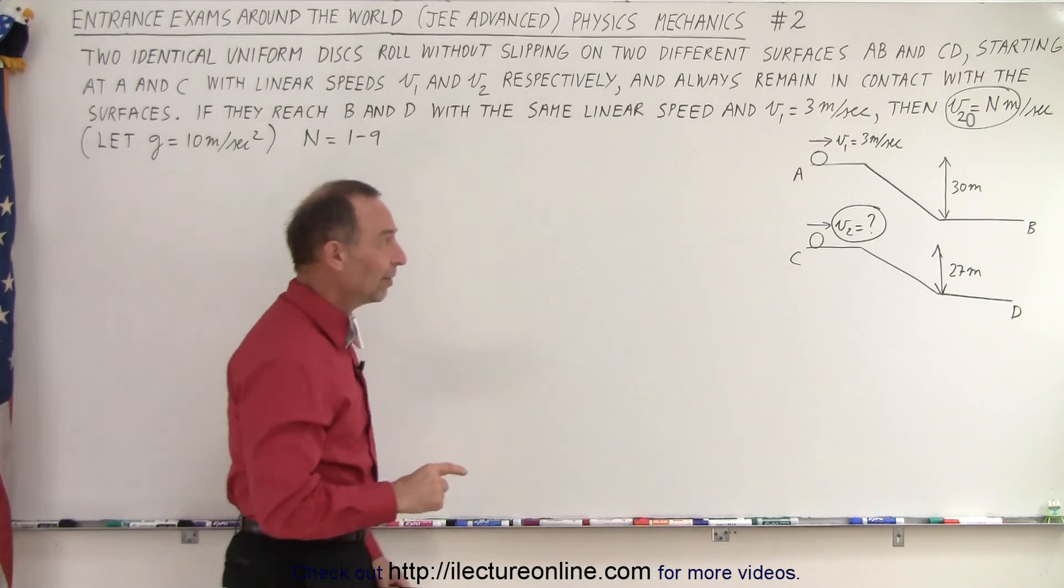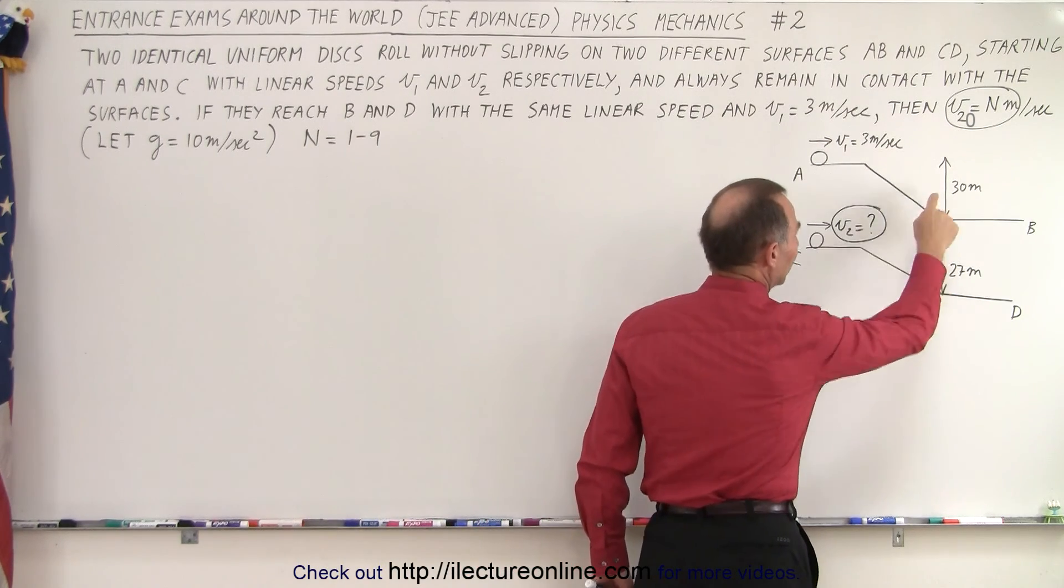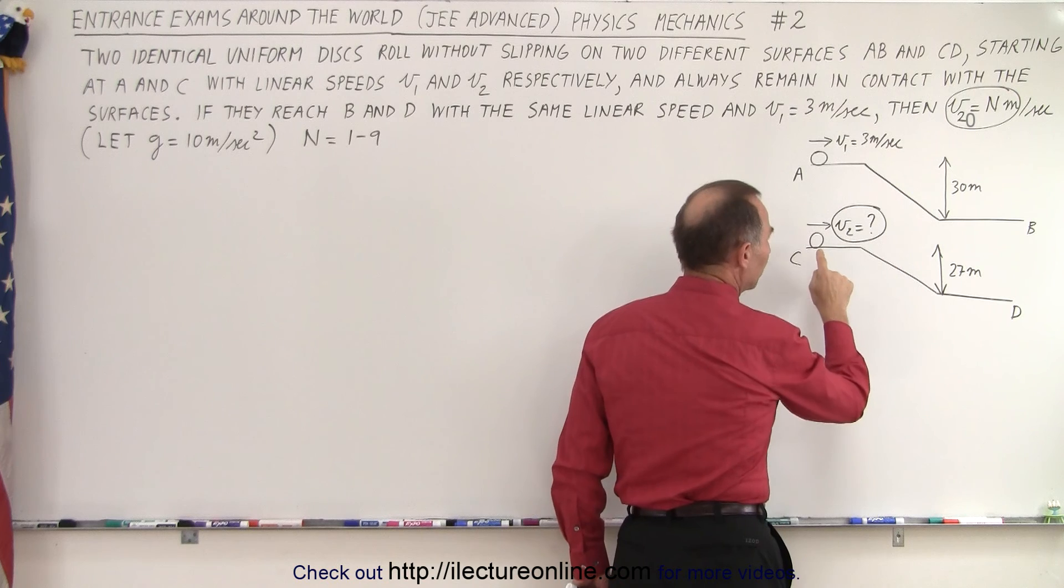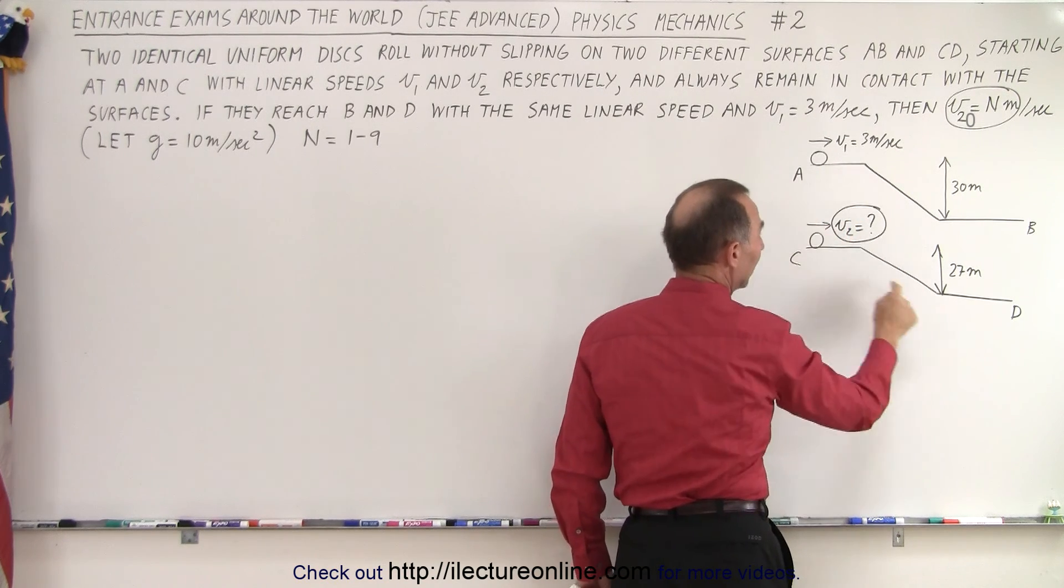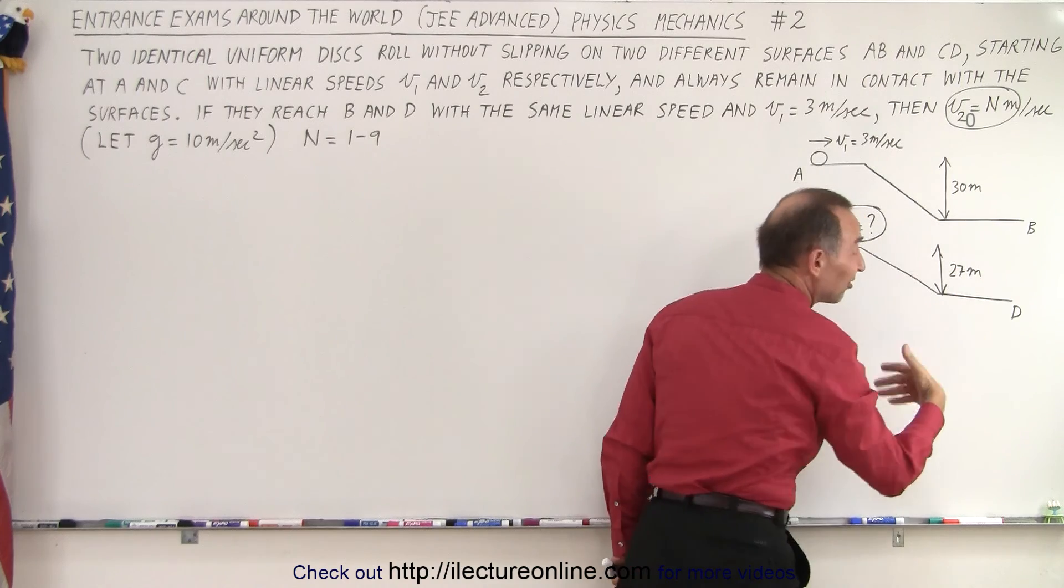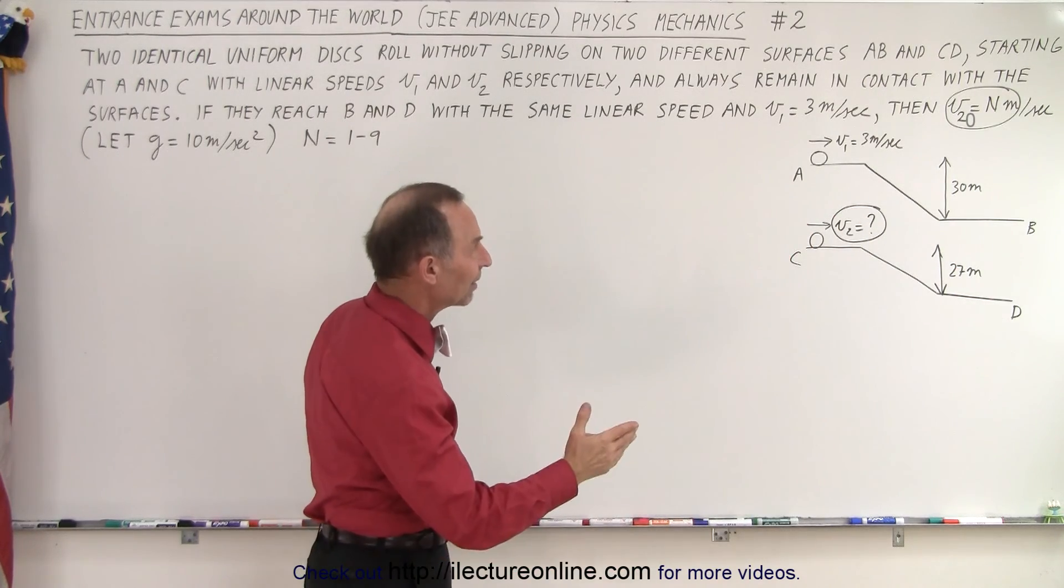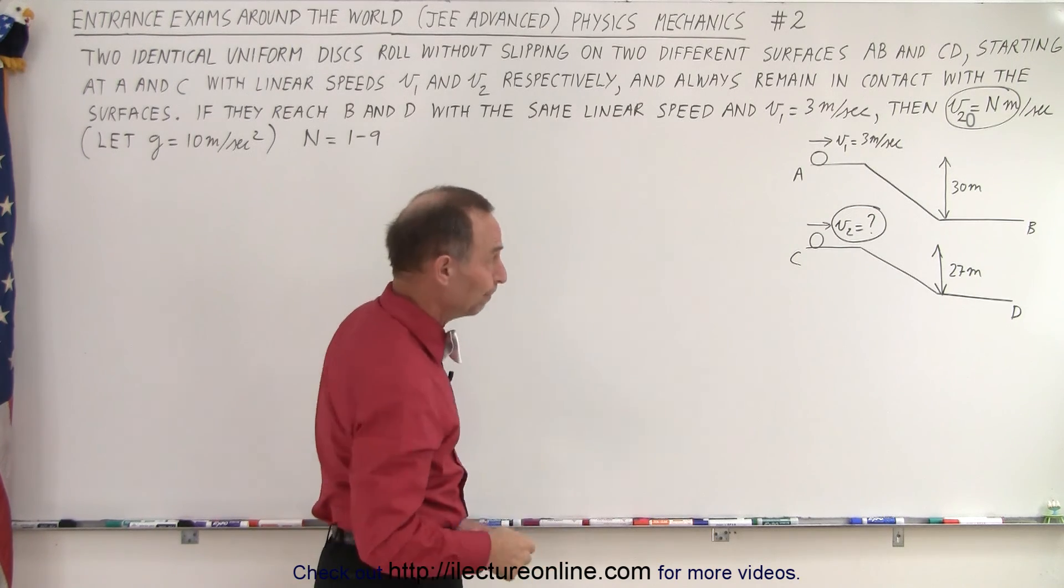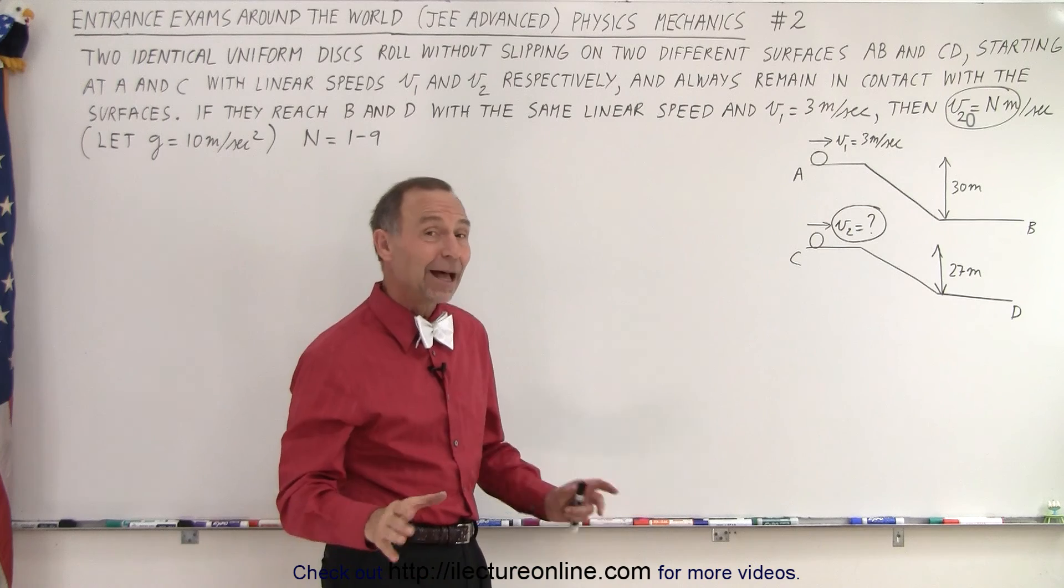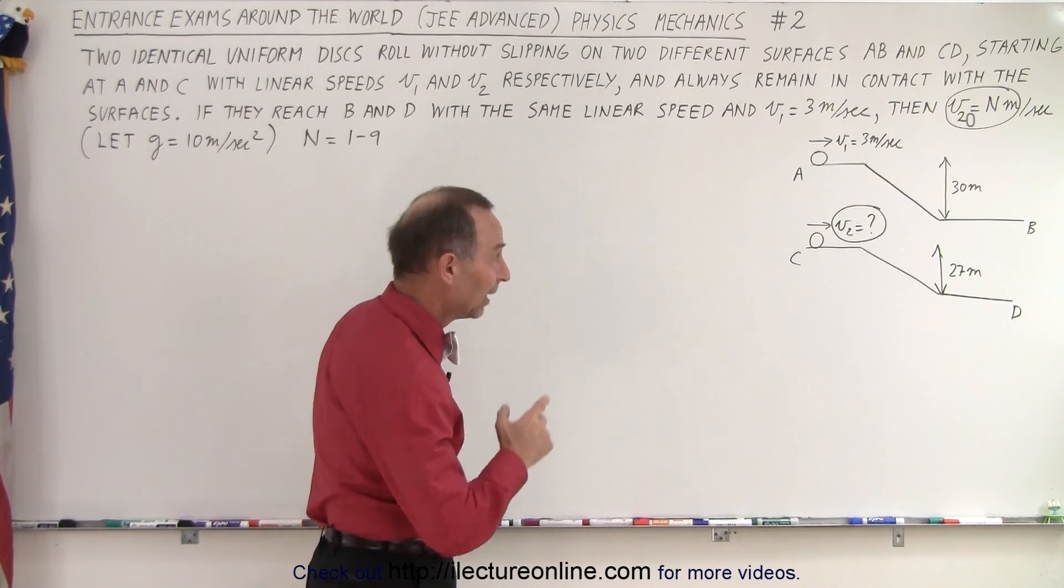Notice that object 2 doesn't have to drop as far as object 1. So the speed of object 2 should be greater than the speed of object 1 if they're both going to end up here with the same speed. That makes sense. So you can see that n cannot be 1, 2, or 3. It should be at least 4 or more. So if you have to guess, now it's down to just numbers between 4 and 9 instead of 1 and 3 included.